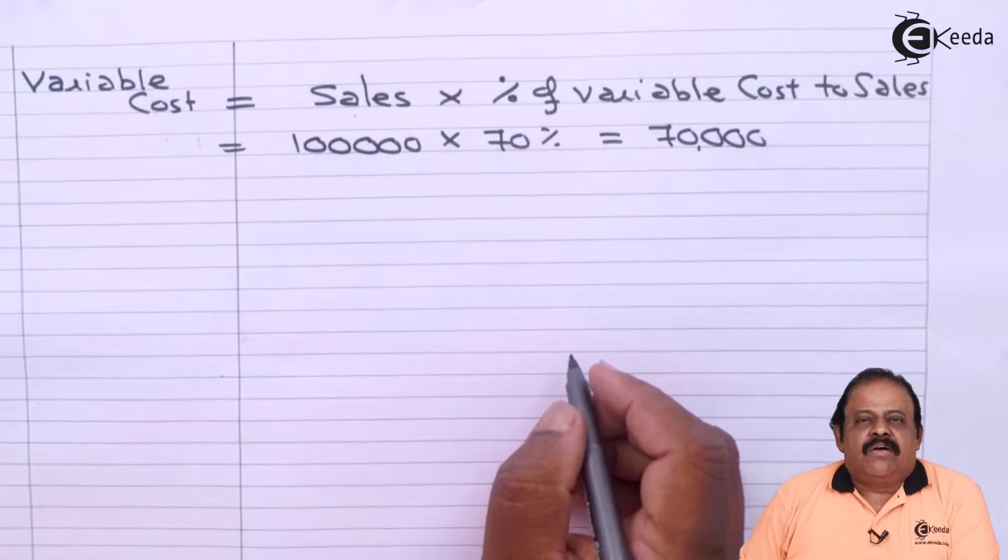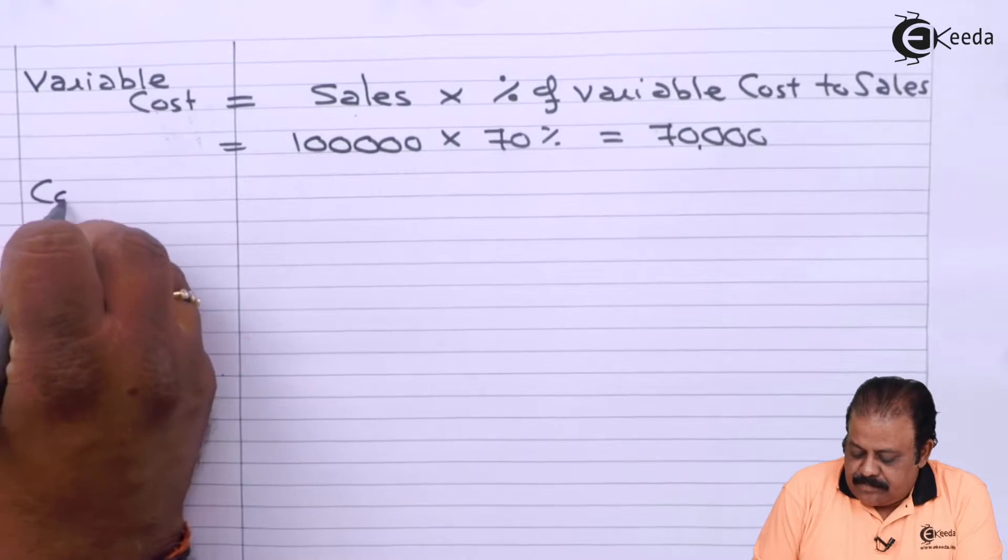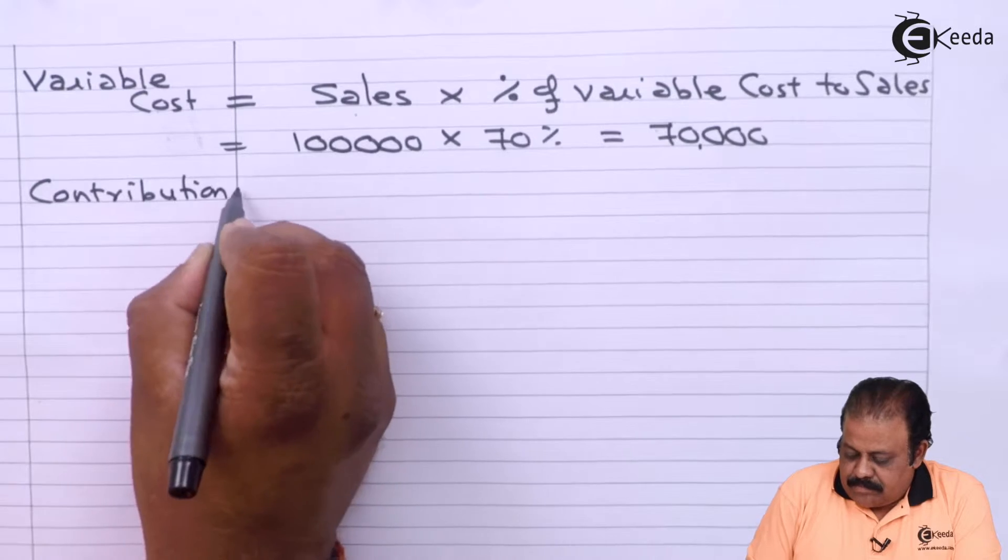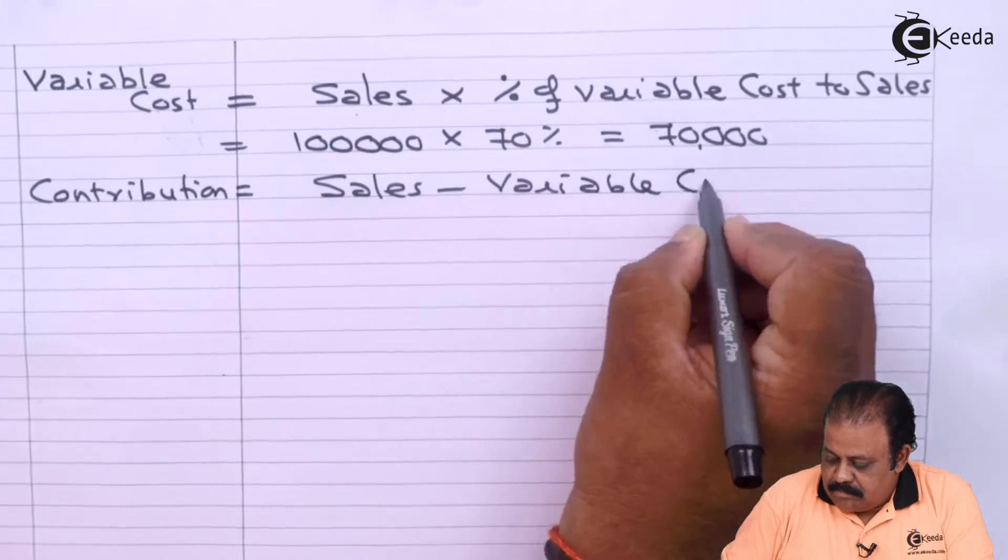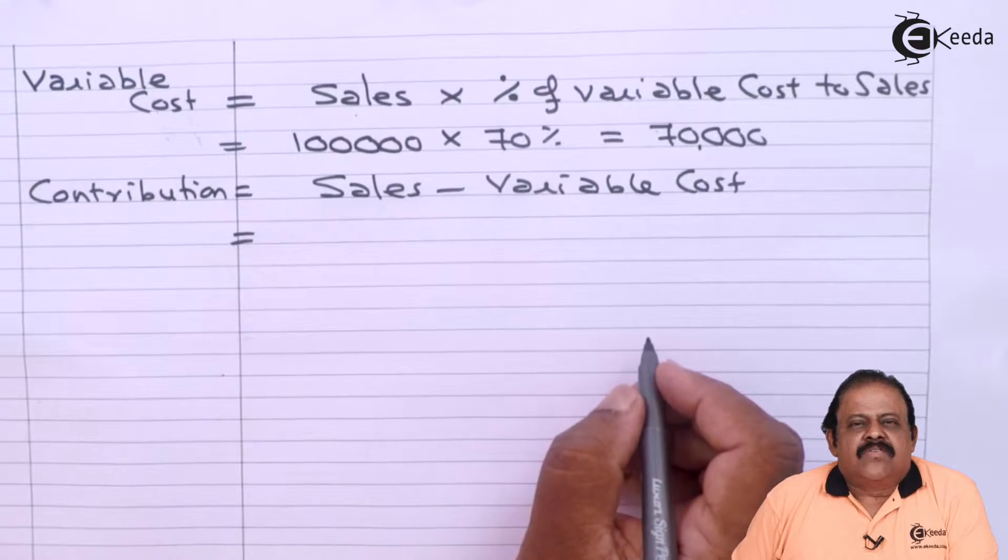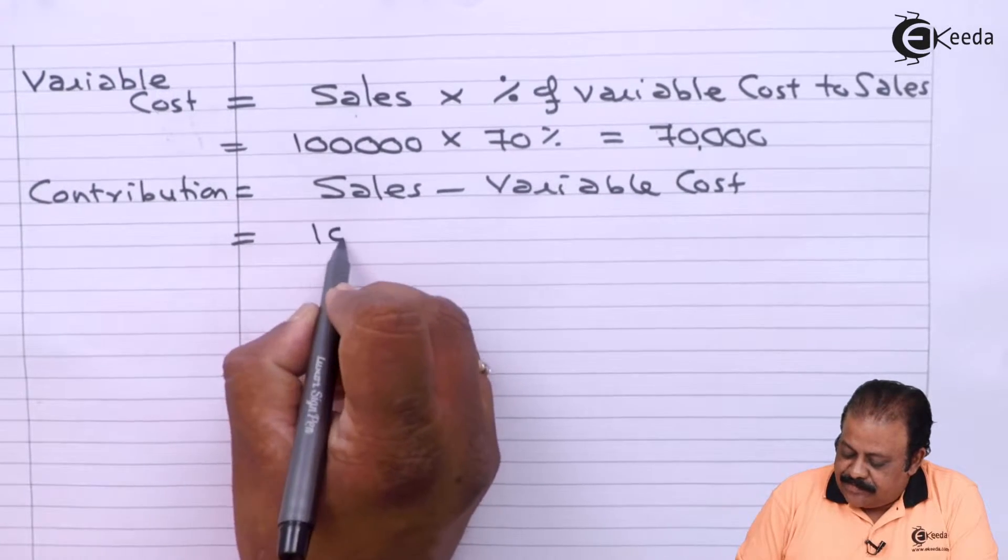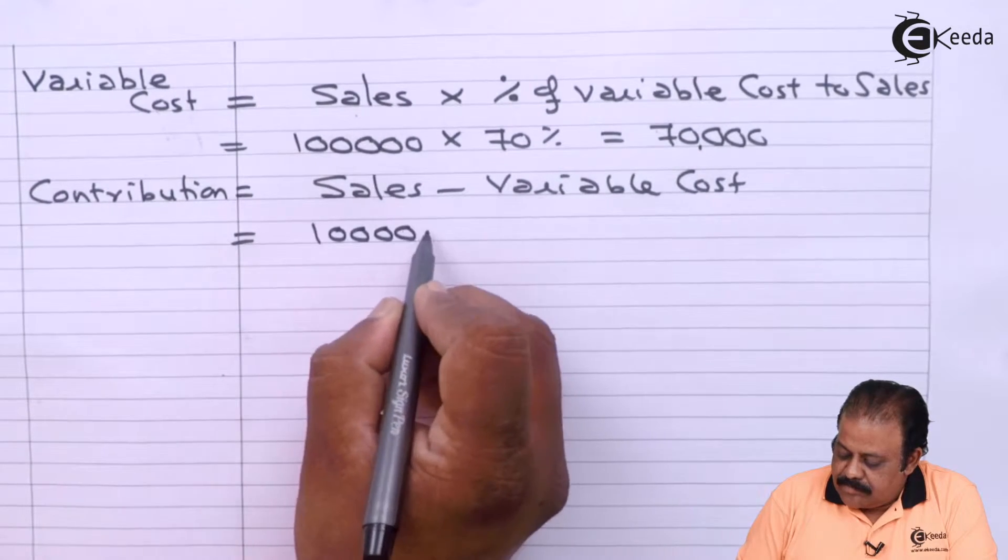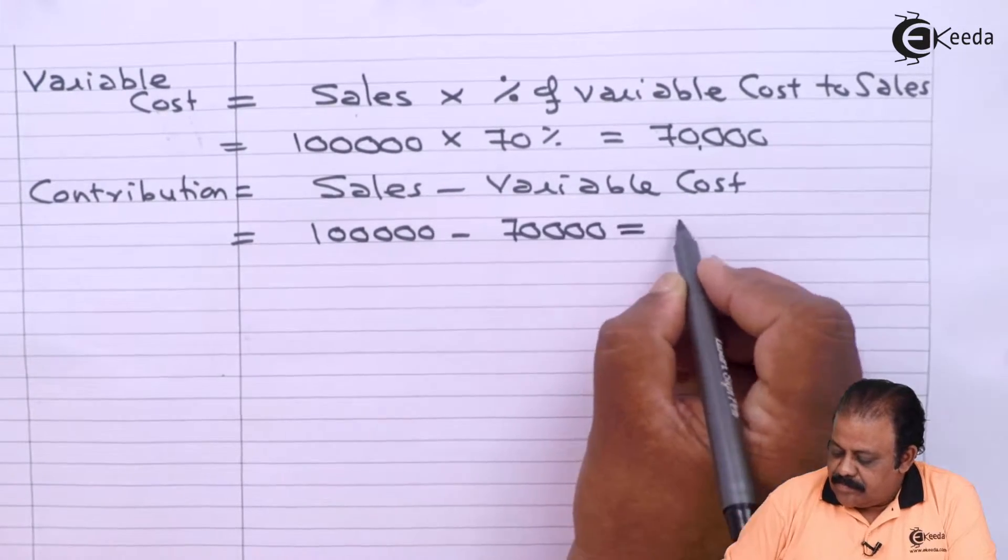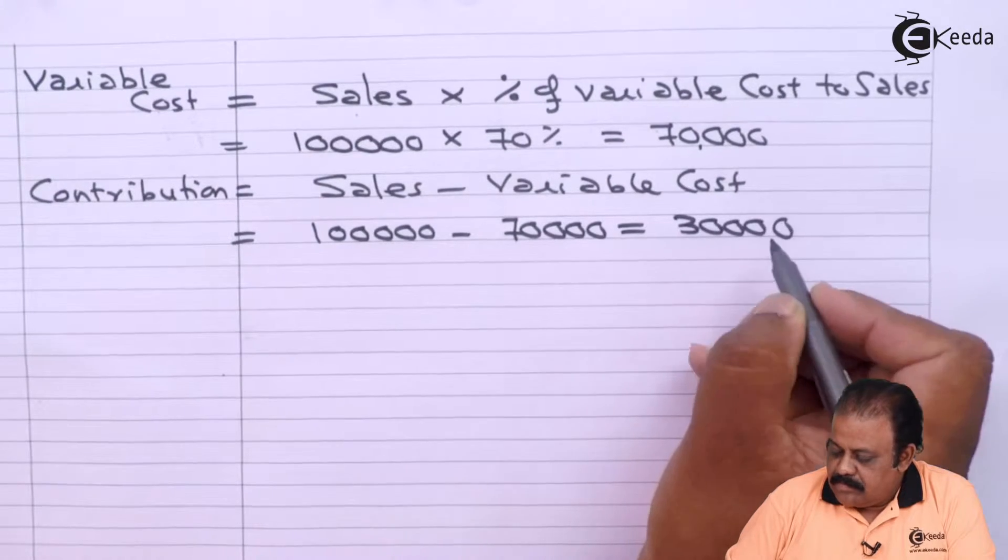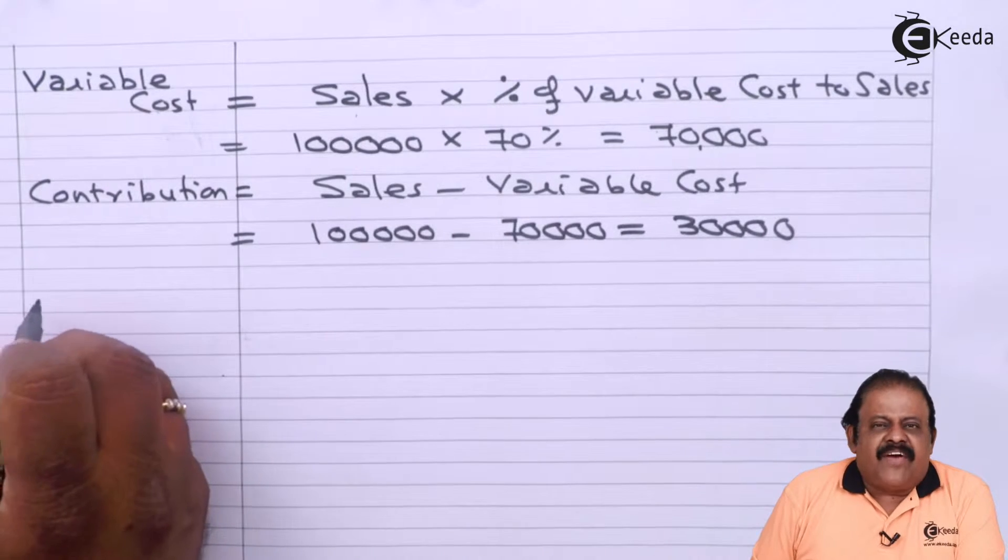So we got the amount of variable cost. Now we can find out the amount of contribution. Contribution is equal to sales minus variable cost. We have sales 1 lakh, variable cost we have found 70,000. So contribution is rupees 30,000. Now we can find out PV ratio.